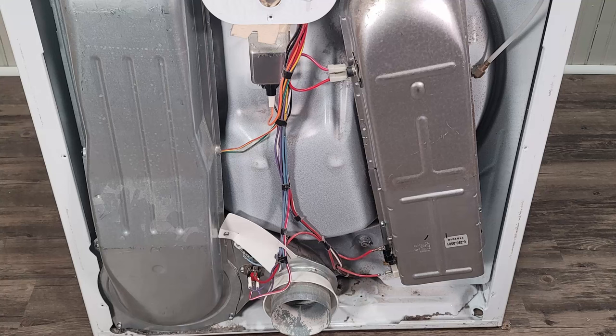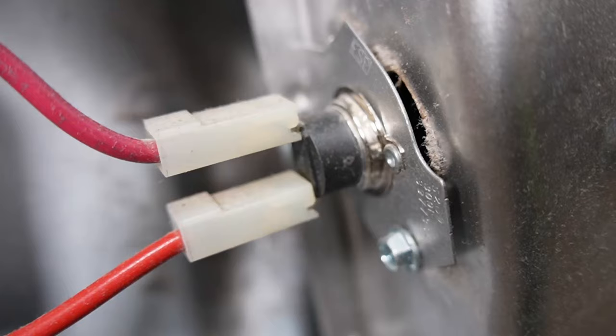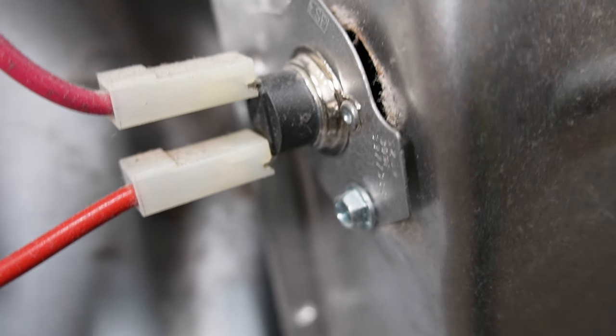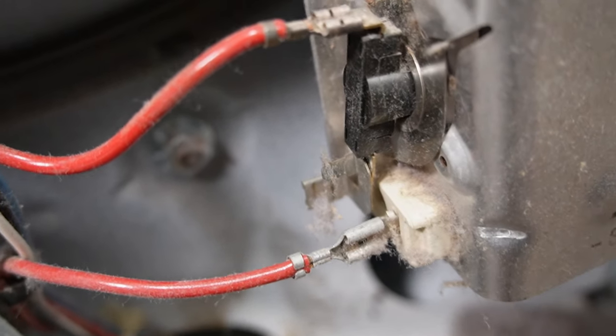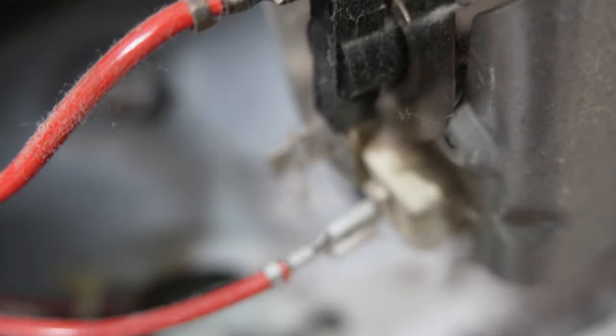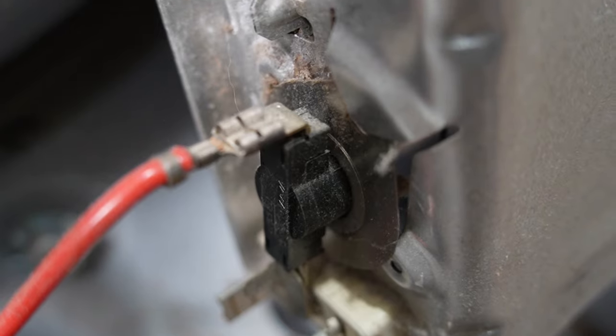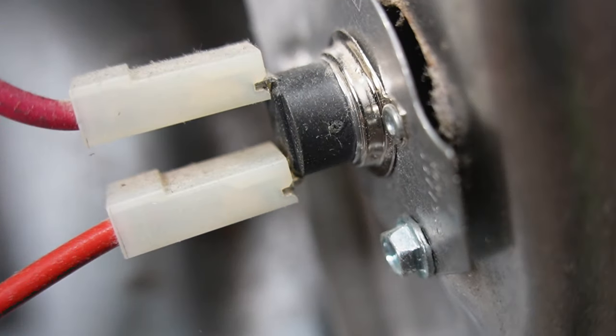When you remove the back plate of this style dryer, there's essentially two main groups of components. On the right side, you're going to have the heating system with the high limit thermal fuse or thermal cutoff, depending on how you say it. Then near the bottom, you're going to have the thermostat and heating element itself. The thermostat may have a few different configurations on how it attaches, unlike the one in this video, but they're all essentially the same operationally.